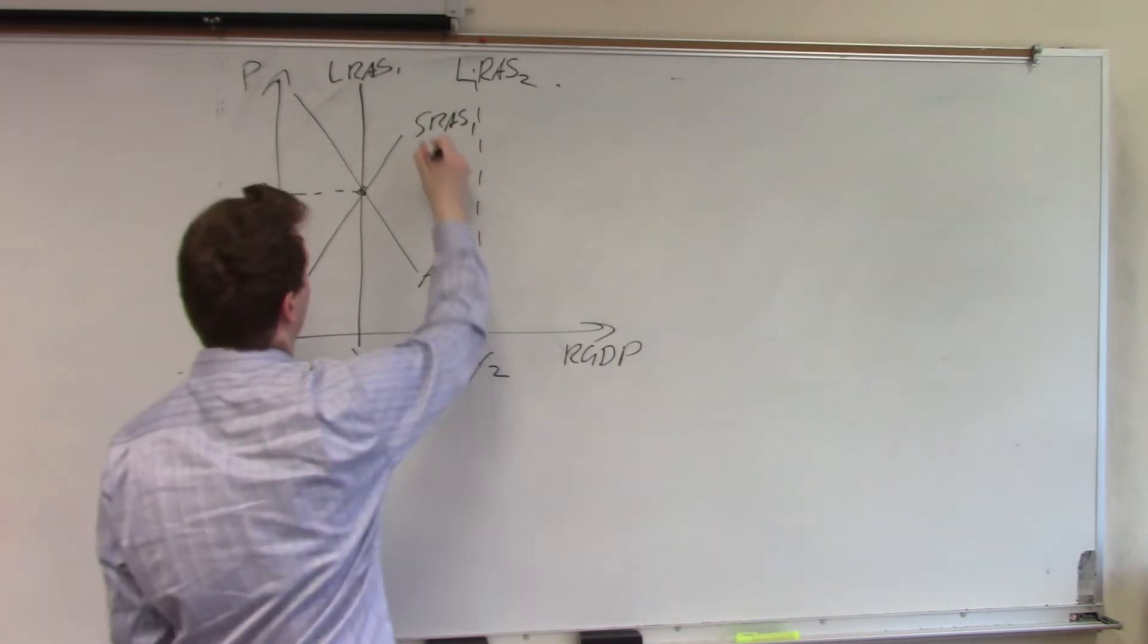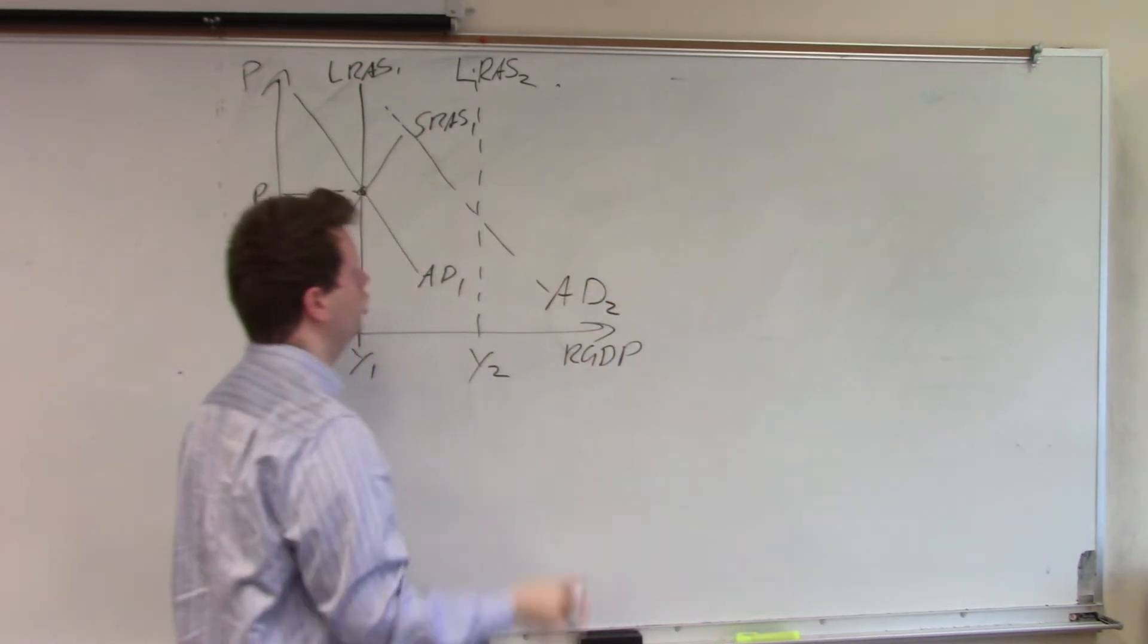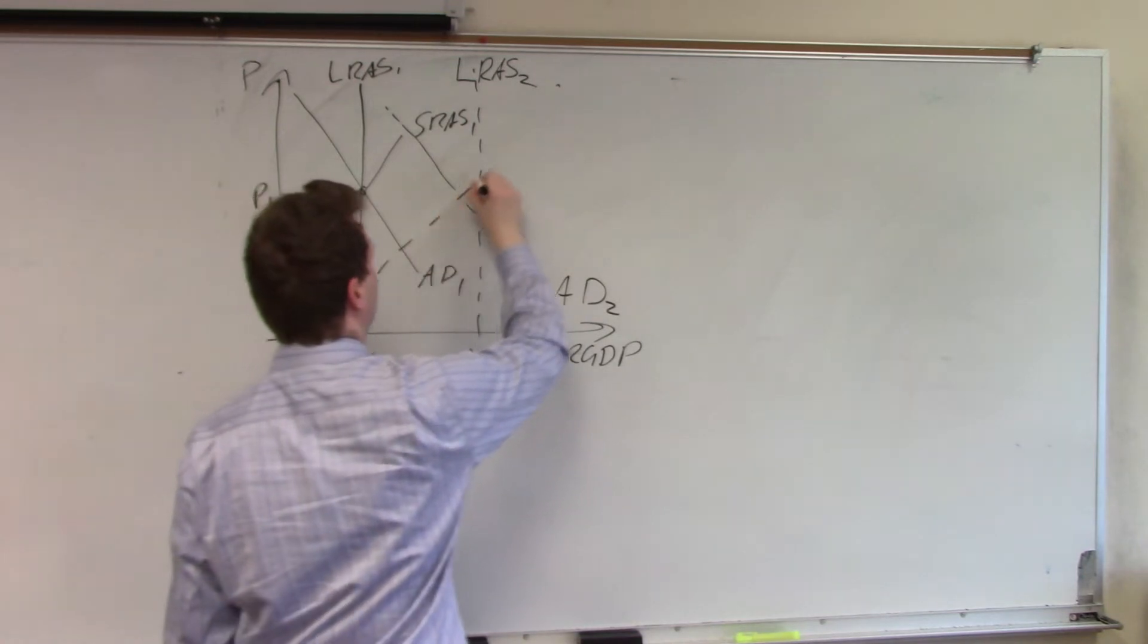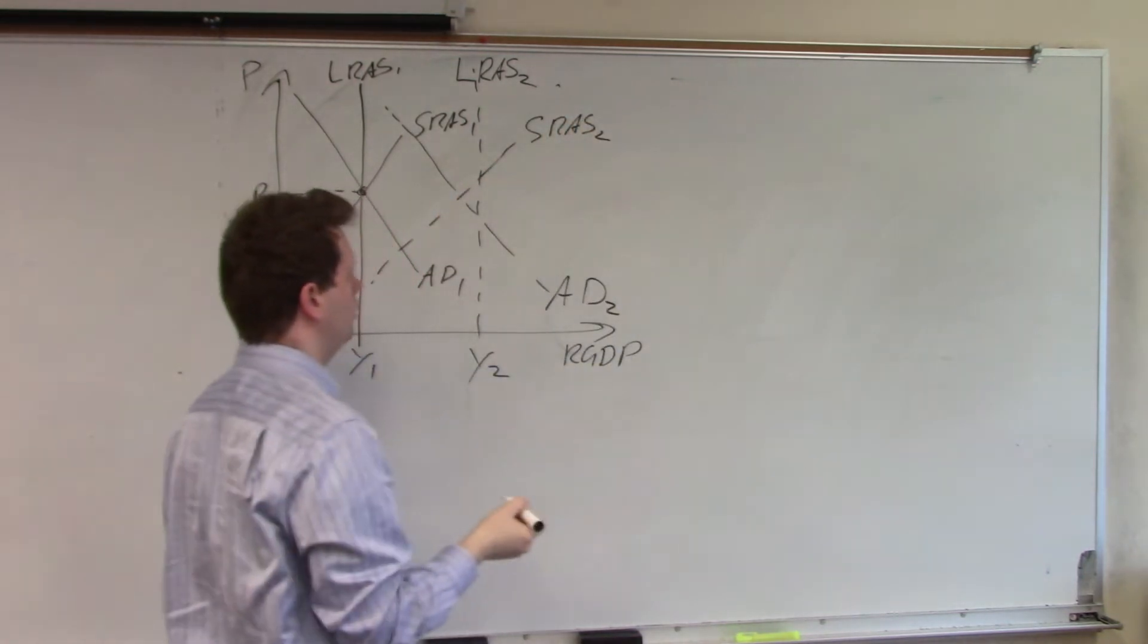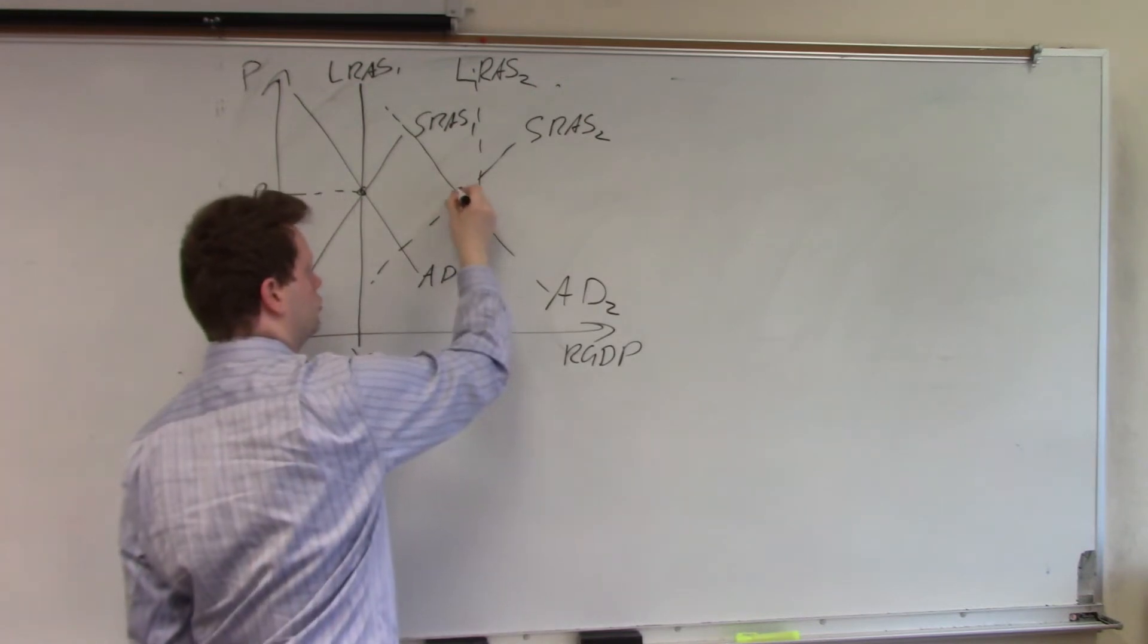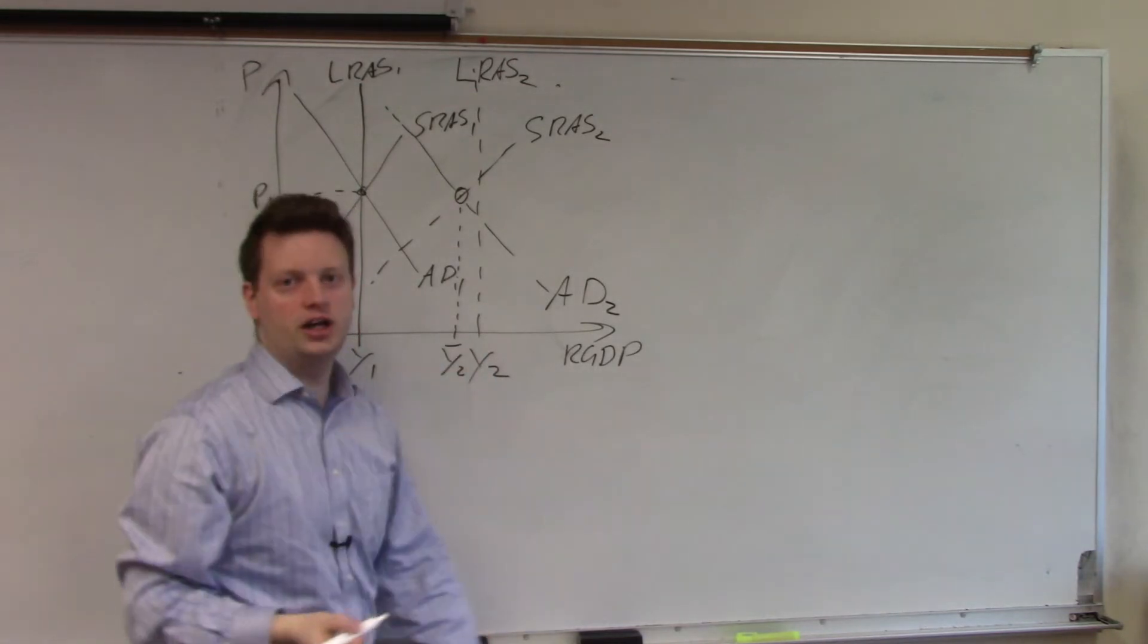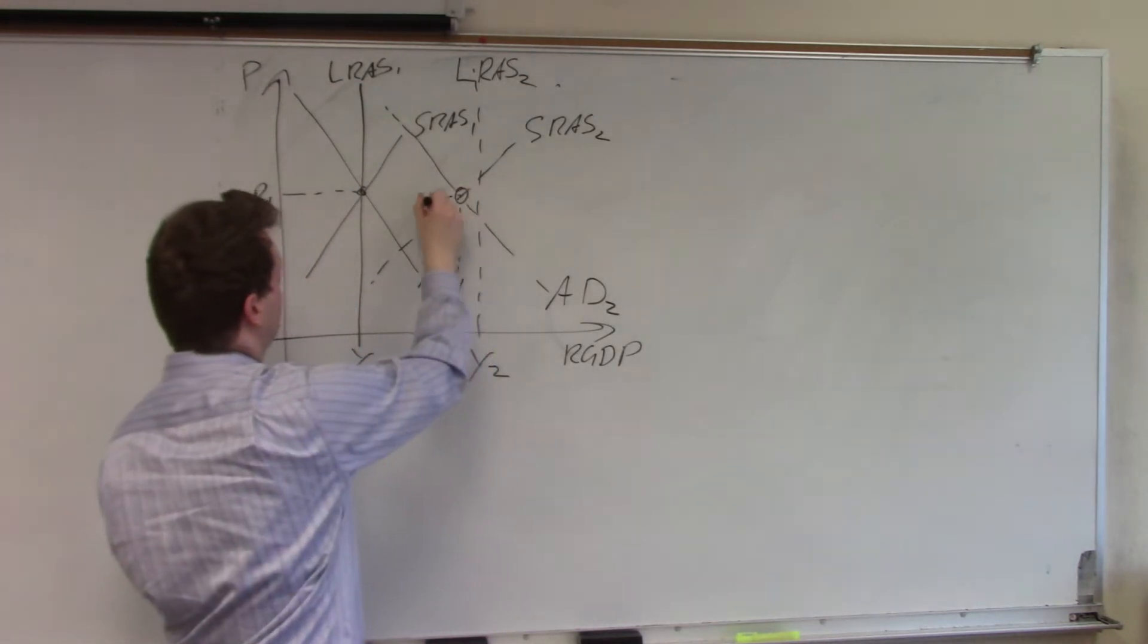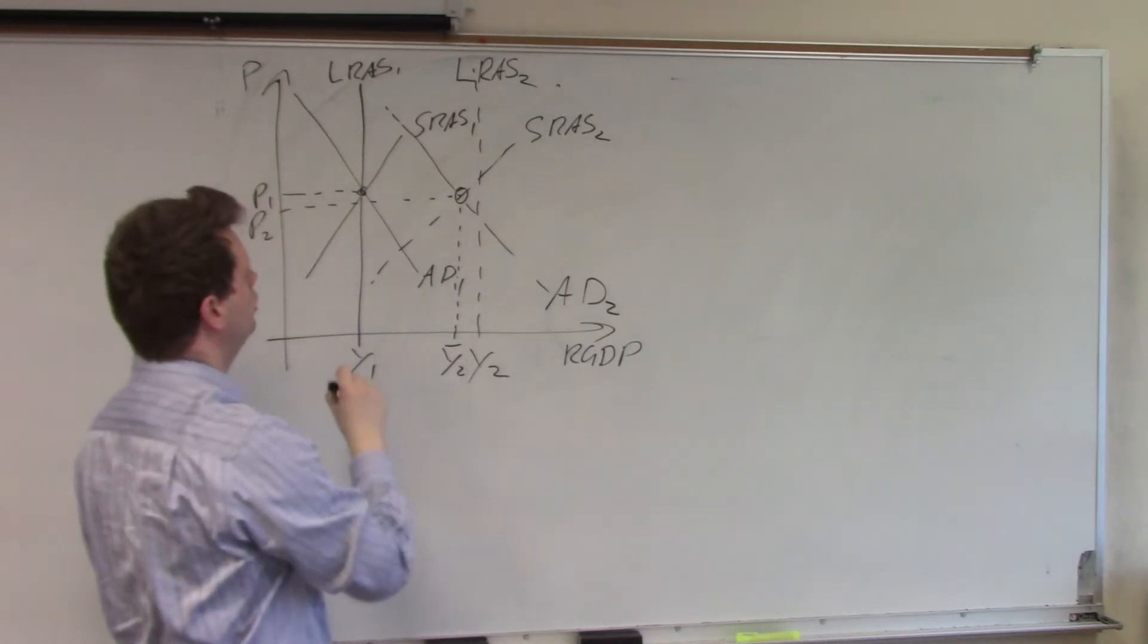So, we get a new aggregate demand curve and we get a new short-run aggregate supply curve here which will lead to a new equilibrium Y2 bar with a new price level P2 here.